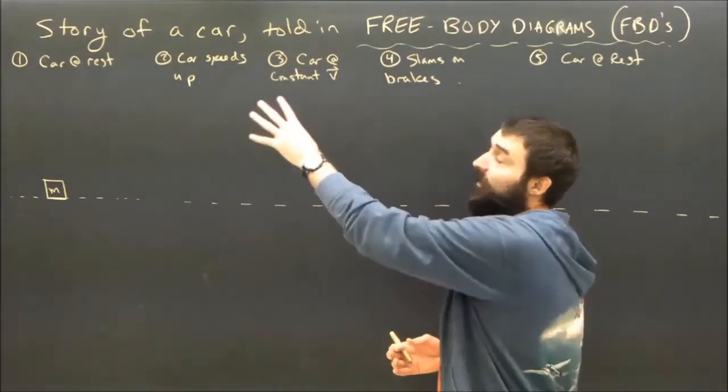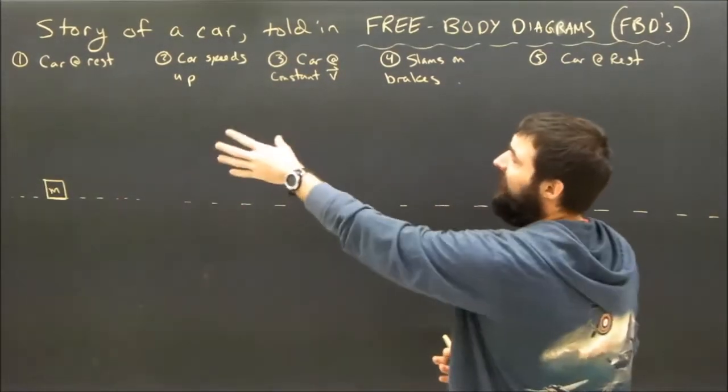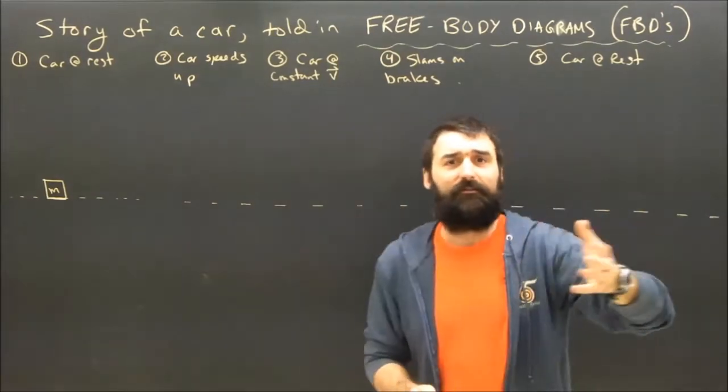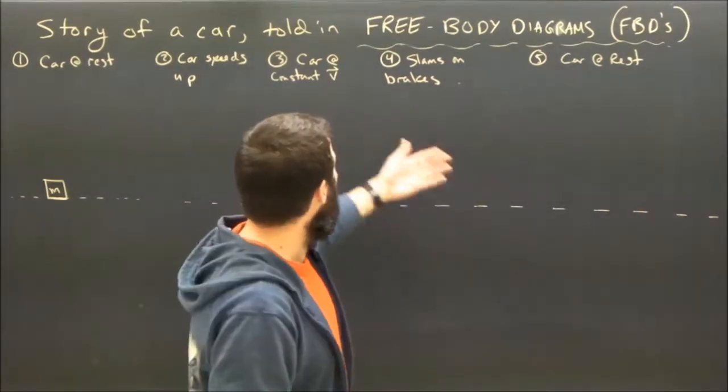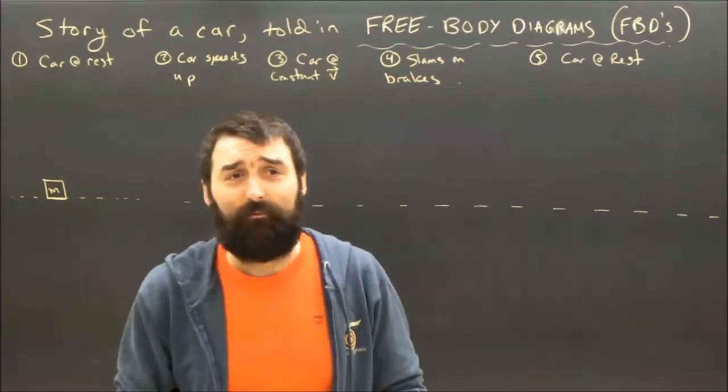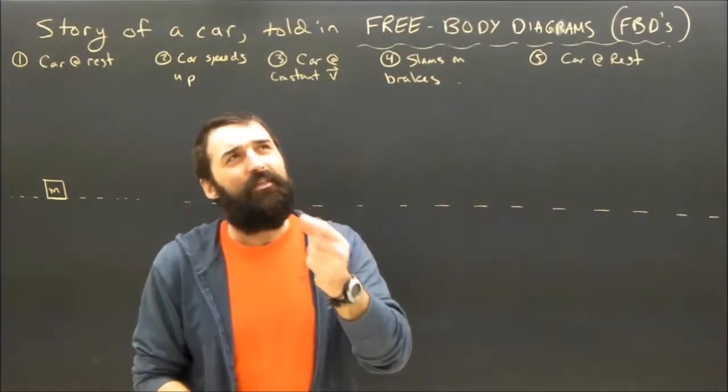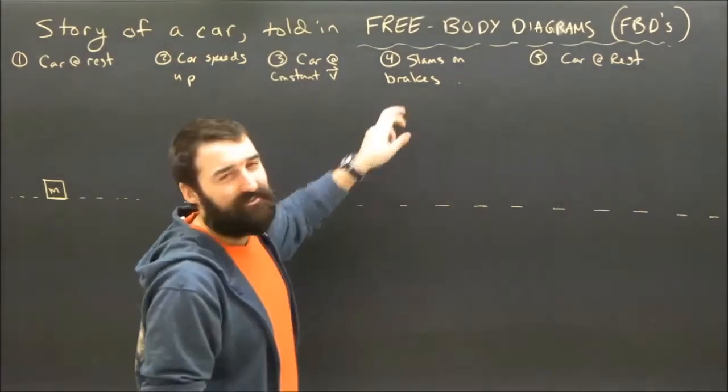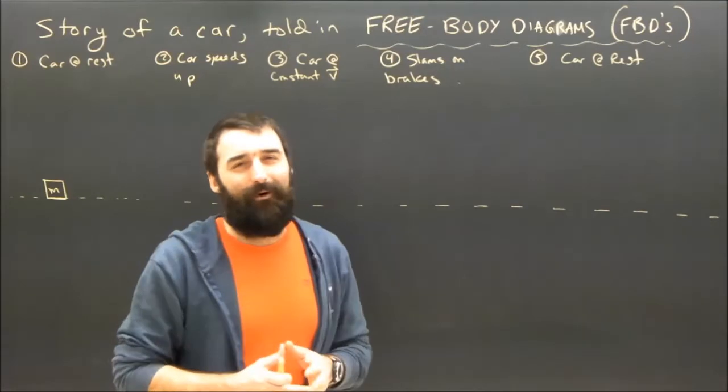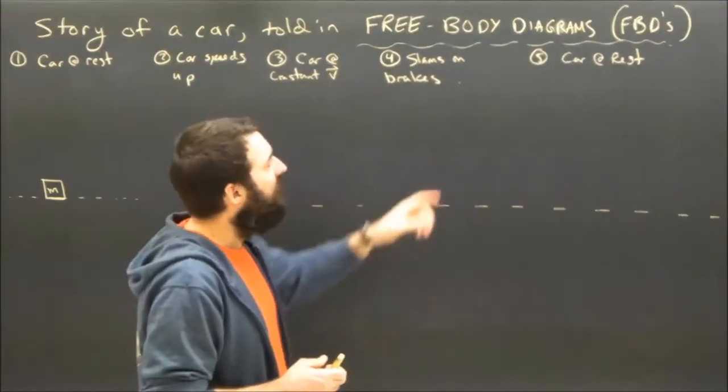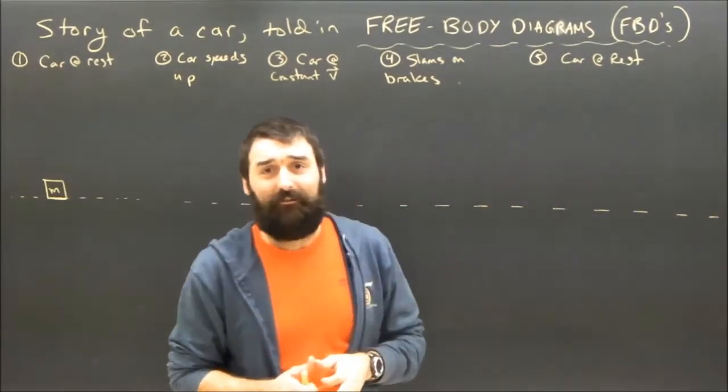We're going to take this story of a car. A car is going to start at rest, let's say at a red light, light turns green, it speeds up, it goes at a constant velocity for a while. And then in step four, maybe a teenager wanders in front of the road and the driver thinks for a second and pauses and eventually decides to slam on the brakes because they don't want to hit the teenager. Anyway, the car eventually is at rest.